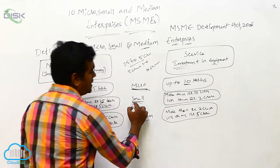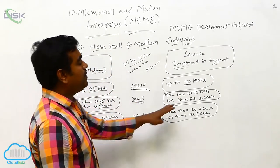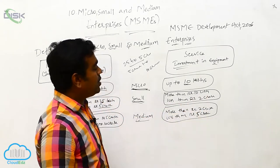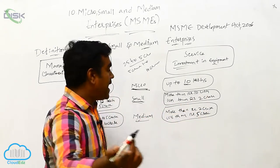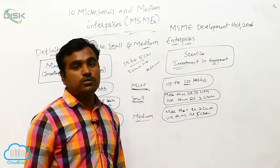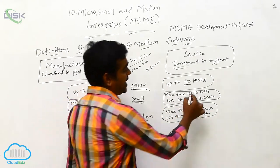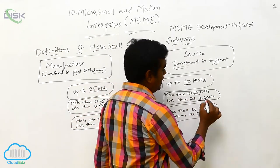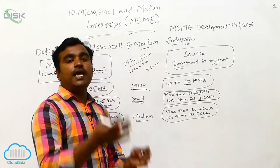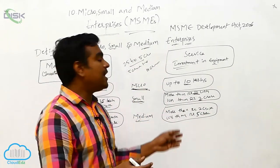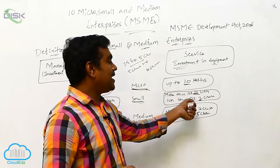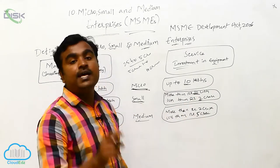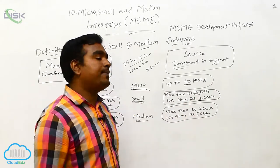Small service enterprises are those where the investment in equipment is more than 10 lakhs and less than 2 crores. If the investment falls between 10 lakhs and 2 crores, it is regarded as a small enterprise.